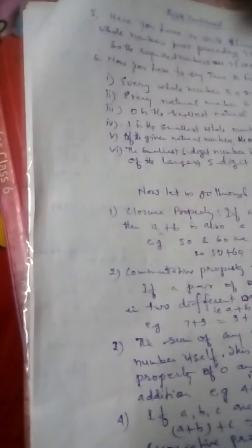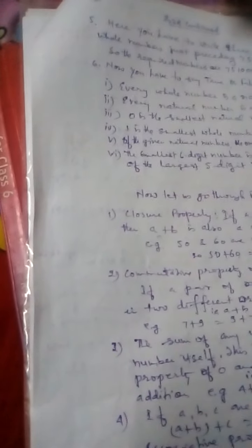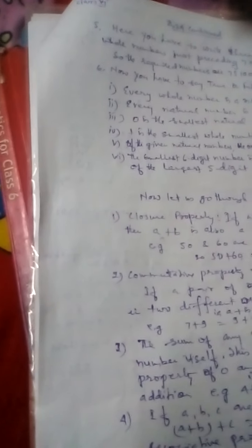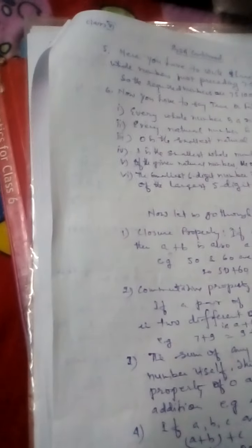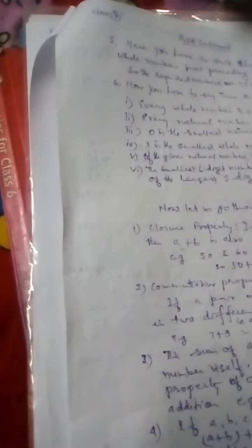Zero property, or property of zero: if you add zero to a number, the same number you will get. And then associative property. Suppose a, b, c are three whole numbers, then in any order you can add them. Like a plus b plus c will be equal to a plus b plus c.